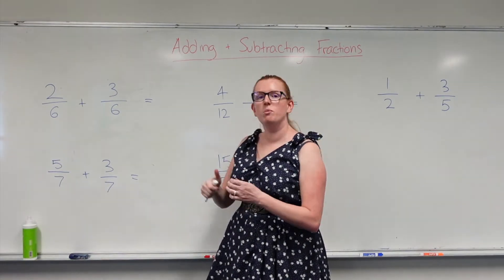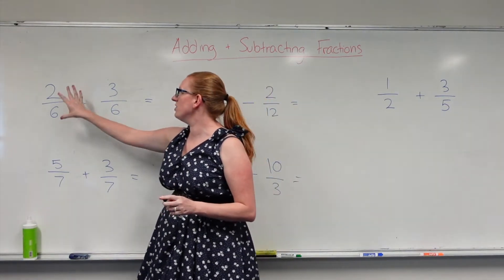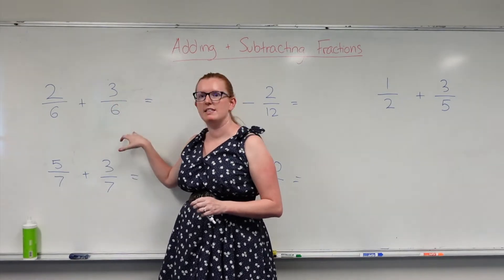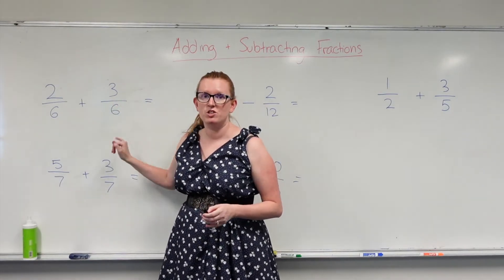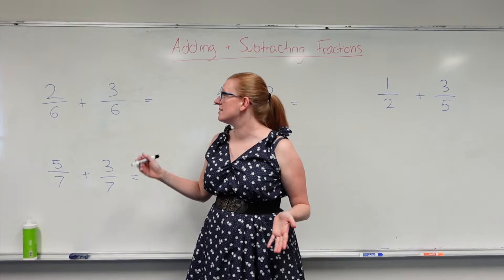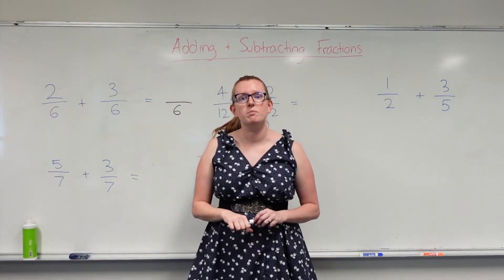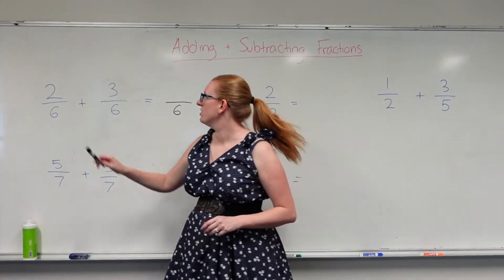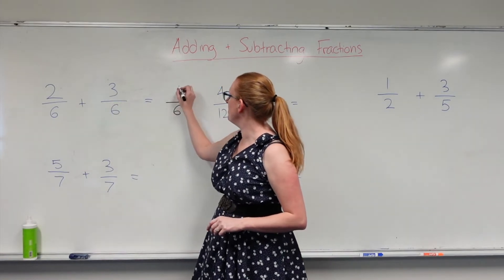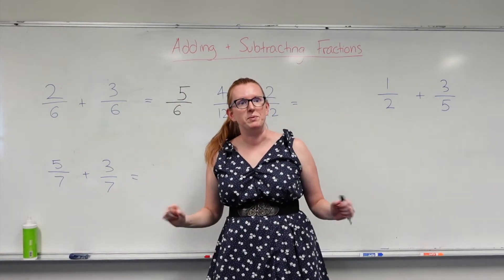Our denominator always stays the same. So if I've got 2 over 6 and 3 over 6, I don't actually add my denominators. My denominator stays as 6. All I do is I add the numbers on the top. So 2 plus 3 gives me 5. Pretty simple.